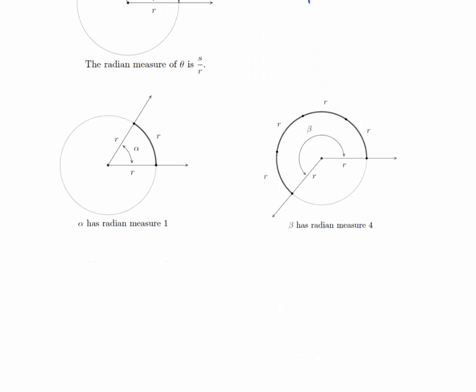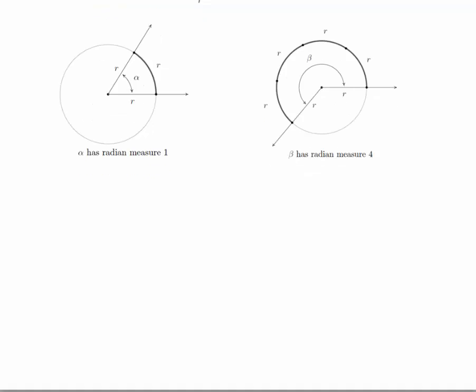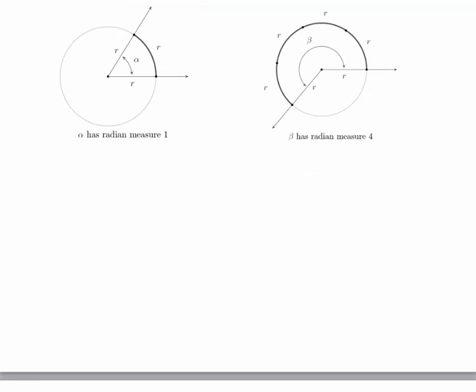When we look at the next picture, alpha has a radian measure of 1. What's happening here is that r is equal to s — in other words, the arc length equals the radius. When s equals r, then theta has to equal 1, which should make sense. When those are equal to each other, you get a radian measure of 1.